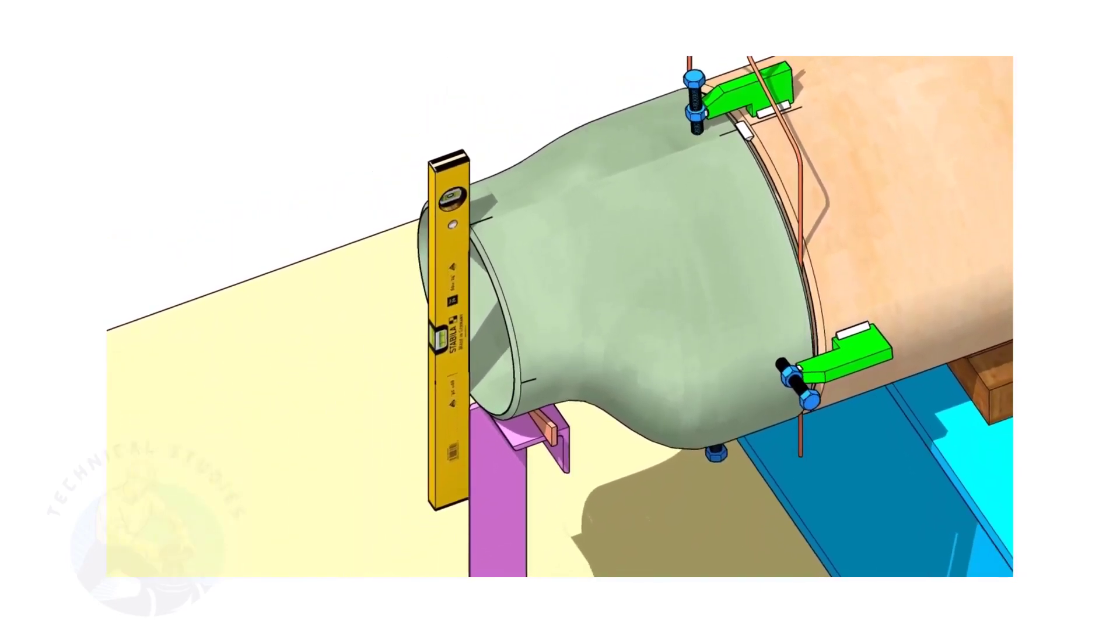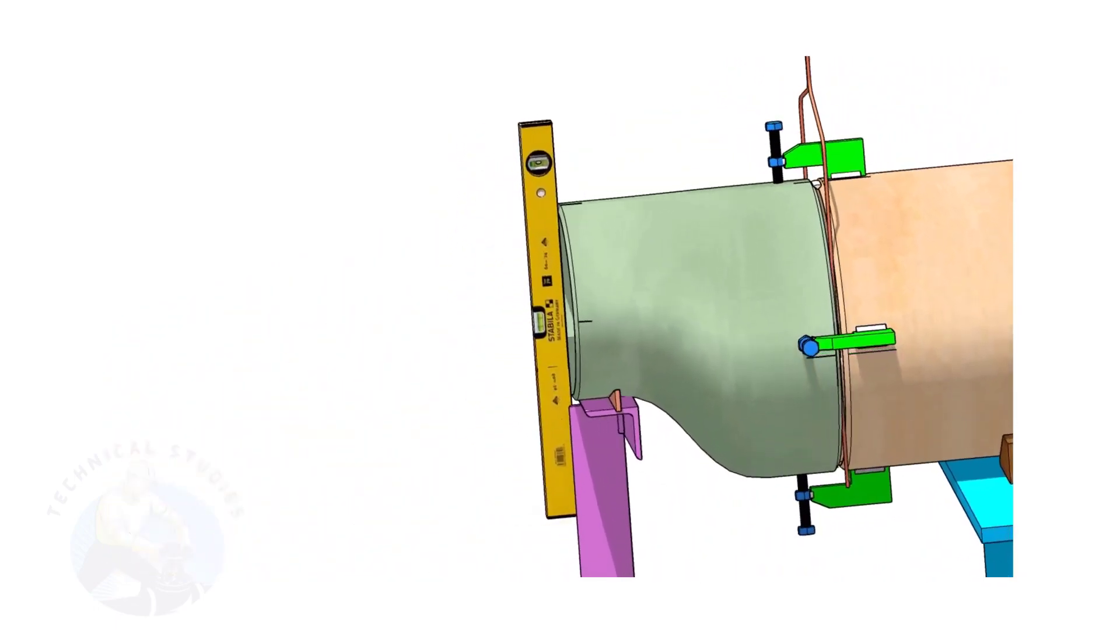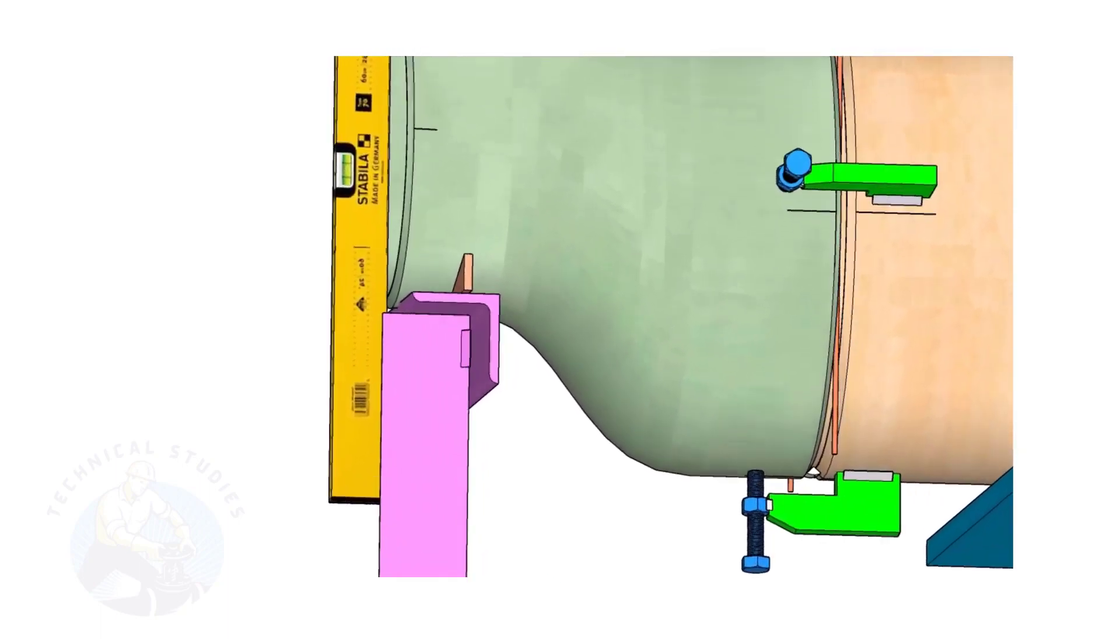Correct the levelness of the outer face of the reducer. Tack weld in the bottom side of the joint.